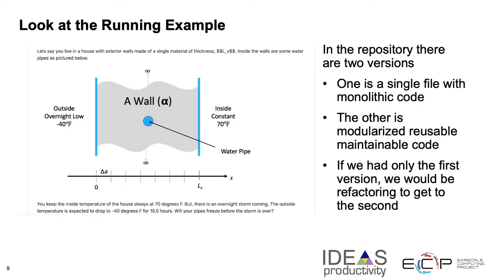We go back to the running example throughout the tutorial: a pipe in the wall where we want to determine if freezing is going to make the pipes burst. Basically, we are solving the heat equation given some boundary and initial conditions. In the repository, there are two versions of this code — one is a single-file monolithic code, which is the ugly code, and the other is a modularized, reusable, maintainable code. Assume we only had the first version and wanted to get to the second — that would be our refactoring objective.